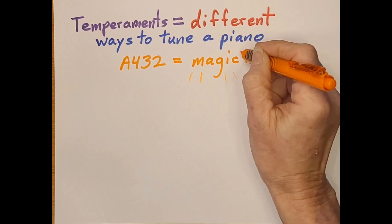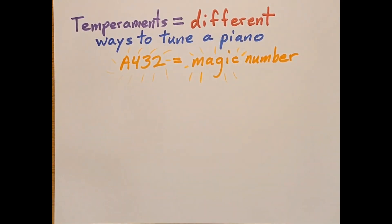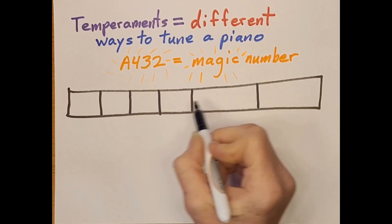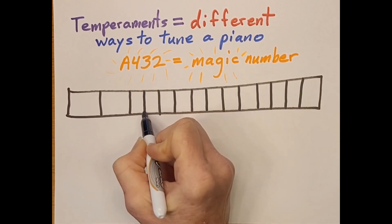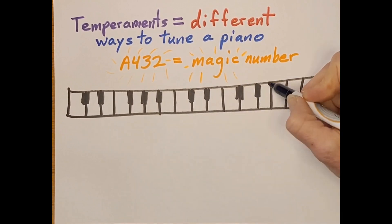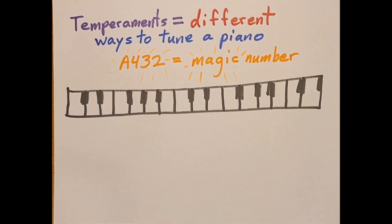Again, for the sake of argument, let's assume this A is the magic number, although I hope by now you realize it's not because the magic number is a single digit. Let's say we tune the A above middle C on our piano to the magic frequency of 432 hertz.